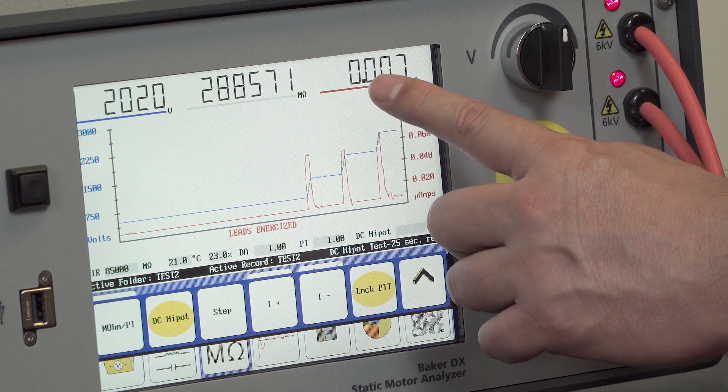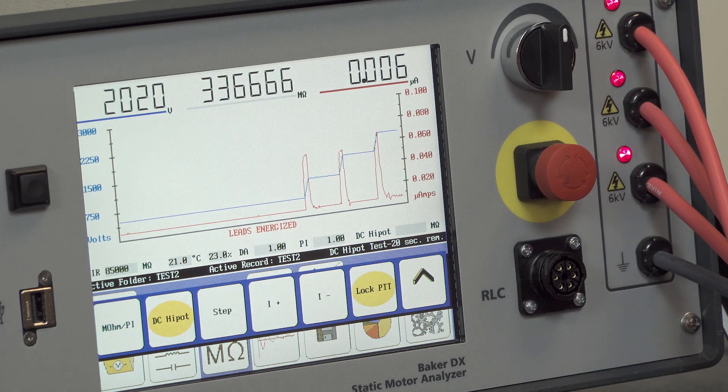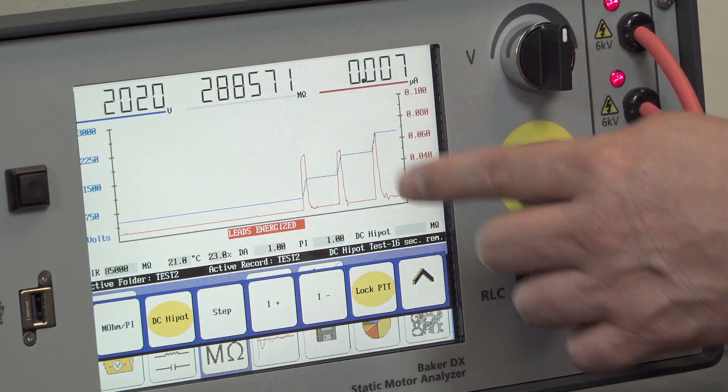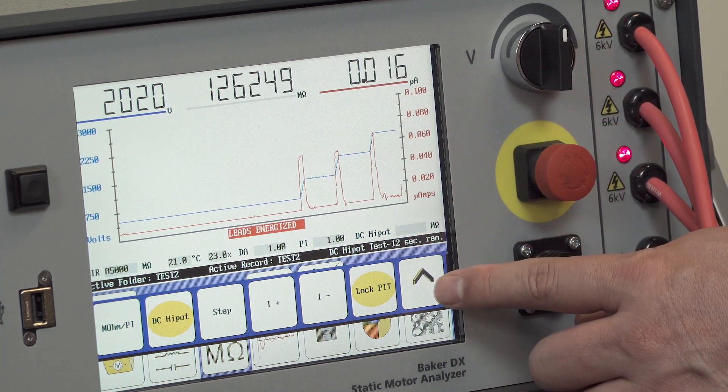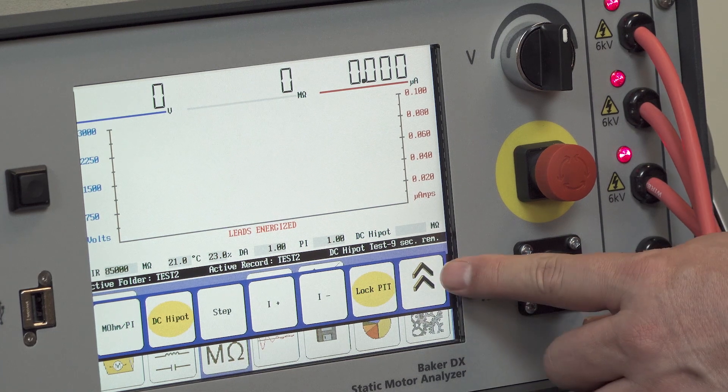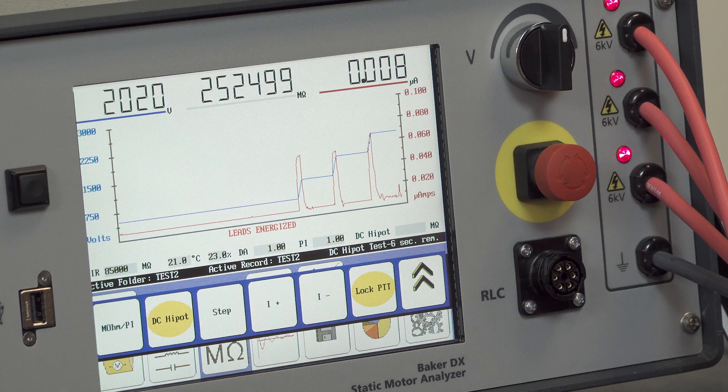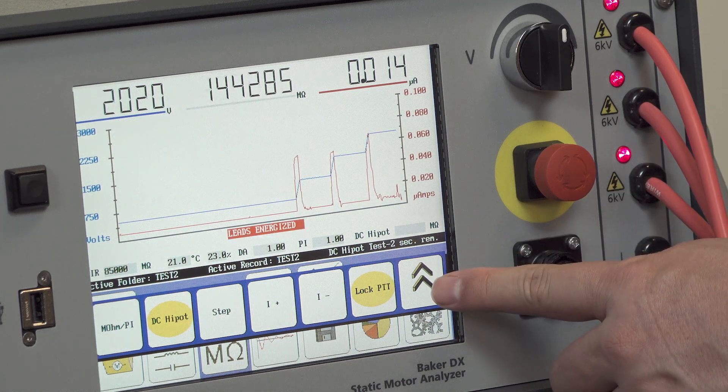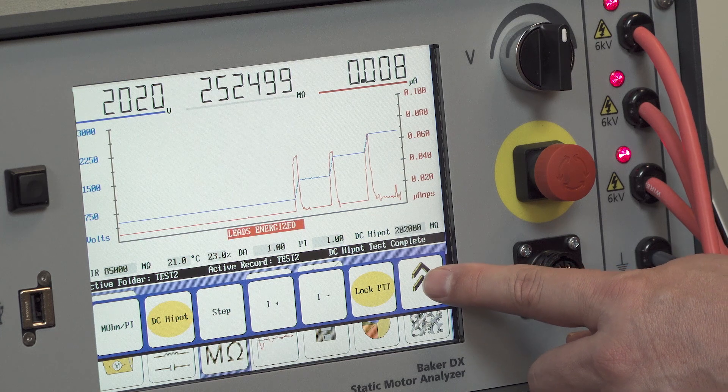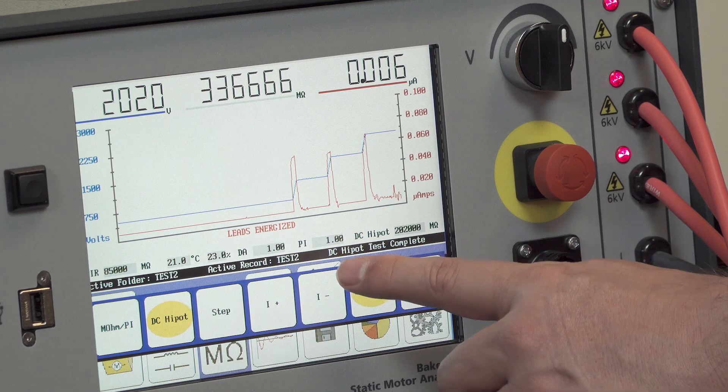As we were ramping, since we were going in small voltage increments, I was using the slow ramp. But you can also select a fast ramp during your ramp to achieve higher voltages more quickly. The rate of voltage change is defined in the user settings. Okay, now that we've achieved 60 seconds in the final step, DC high pot test is complete.